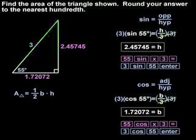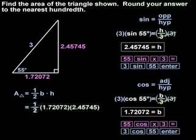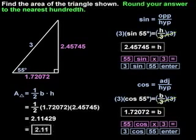So the base of the triangle is 1.72072, which means that the area of the triangle is one-half times 1.72072 times 2.45745, which simplifies to 2.11429. Rounding to the nearest hundredth, our final answer is 2.11.